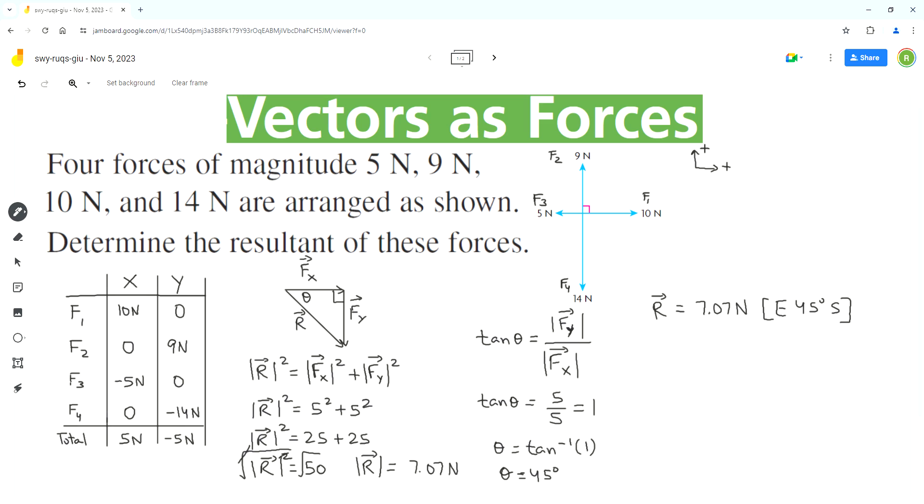From east 45 degrees south, because Fx is directed to the right side and that's where east is. From the east direction we are going 45 degrees to the south to get to the resultant vector. This should be the final answer for this problem.